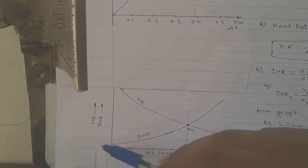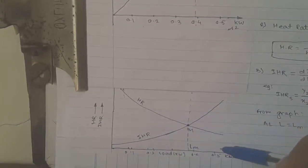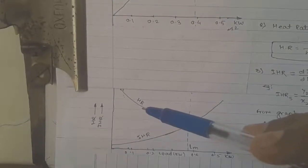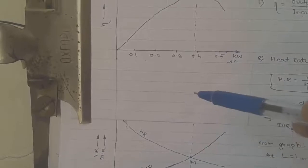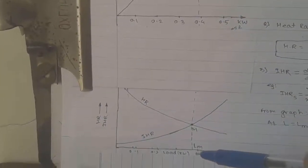To summarize: heat rate goes on decreasing and incremental heat rate goes on increasing as load increases. The point of intersection of the heat rate graph and the incremental heat rate graph is denoted by M. At this point of intersection, the load is maximum. When we draw a vertical line at this point — at approximately 0.4 — we find that maximum efficiency is obtained at that particular load. After this point, when load increases further, efficiency goes on decreasing. Thank you, students.